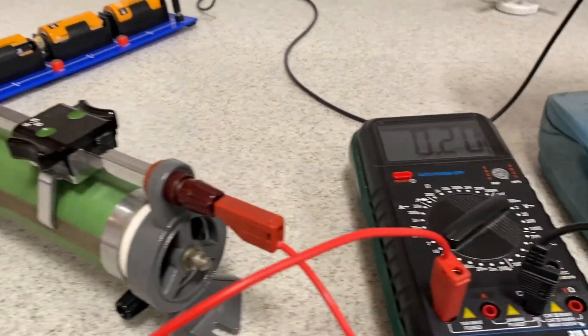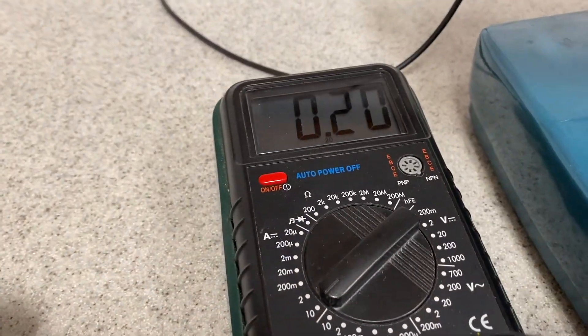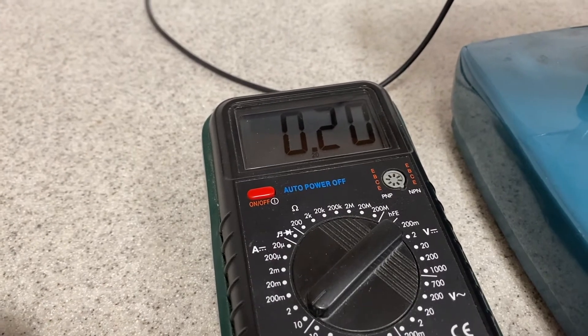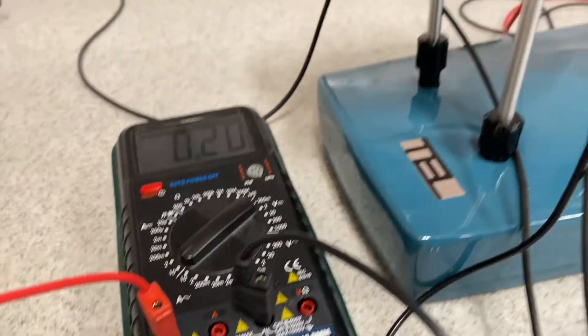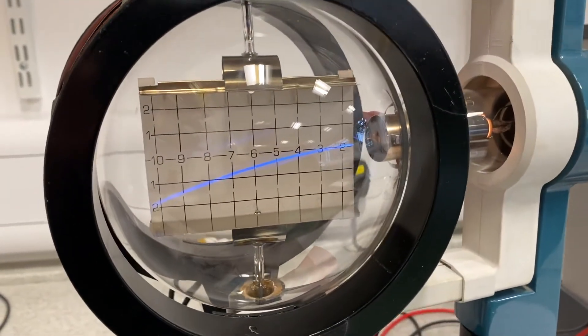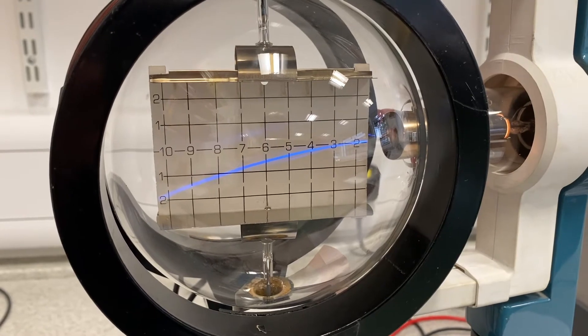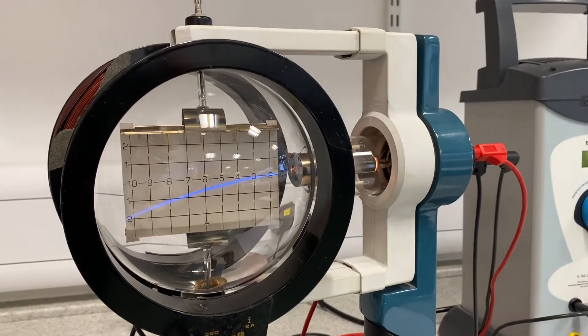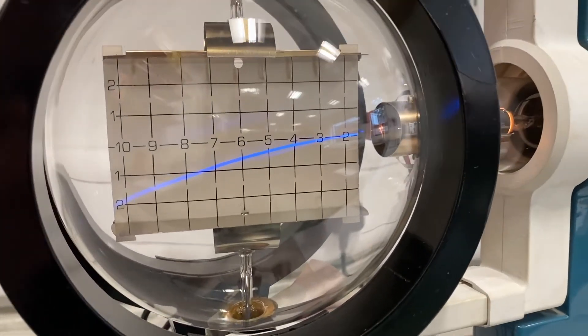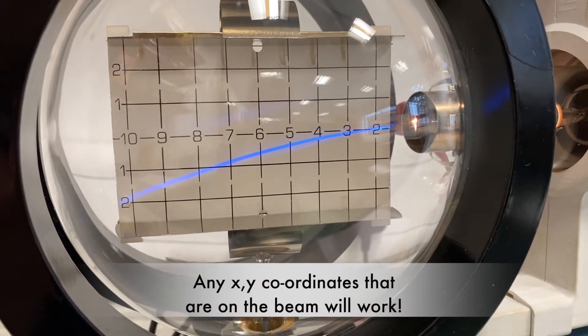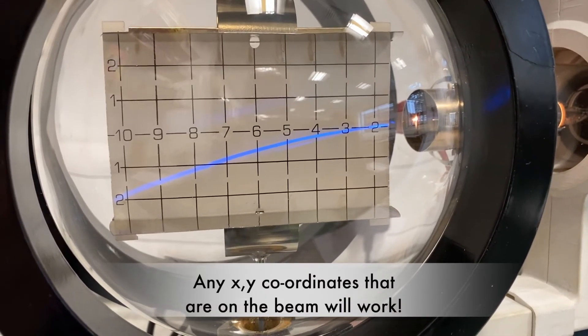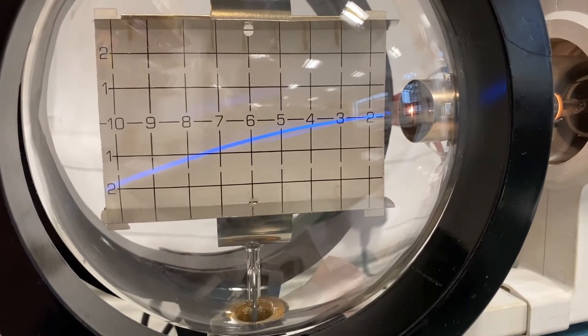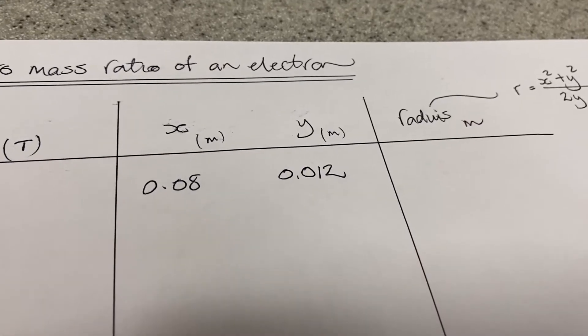Okay, I have moved the rheostat, and so my current is 0.2 amps. That's my first reading on the table. And my first corresponding reading on my x, y coordinate is, I'm going to go on my x axis 8, and my y coordinate would be about 1.2 centimeters. There we go.